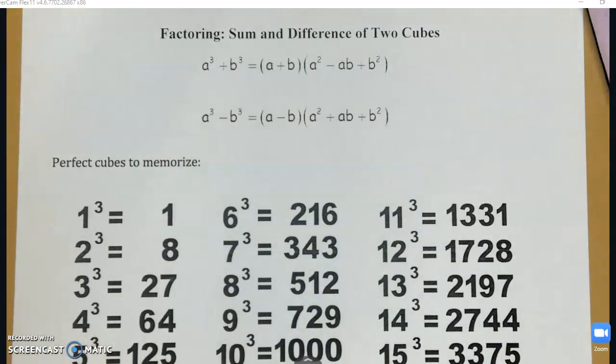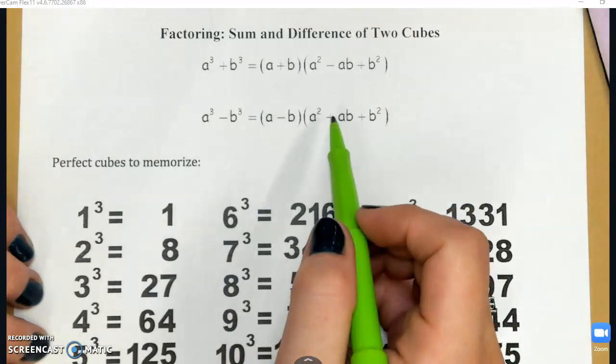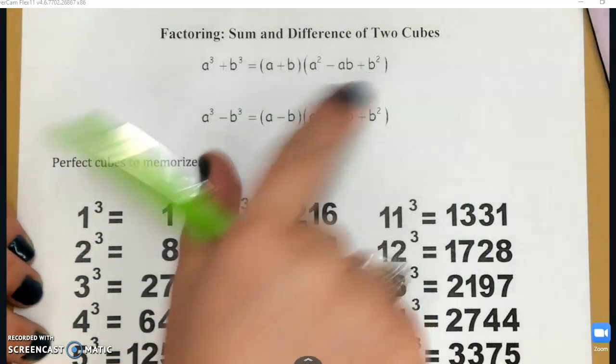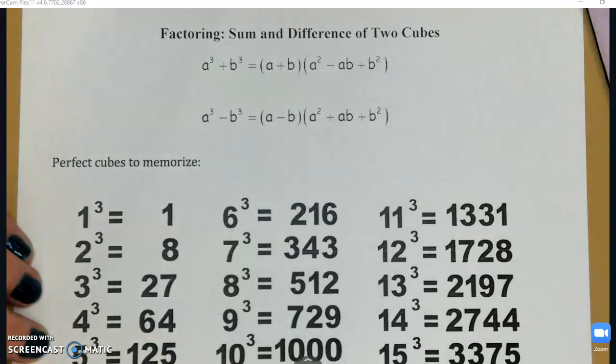And the thing about these is that it's actually going to be easier to memorize than you're probably thinking initially, is that the contents of these parentheses is the same: a, b, a², ab, b². What's different between the two is the operation between them, either addition or subtraction.